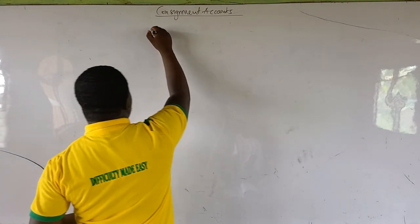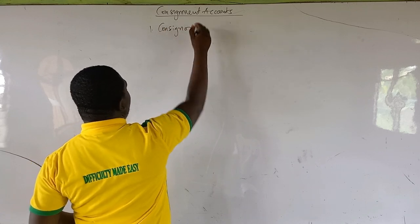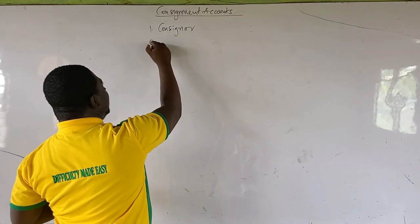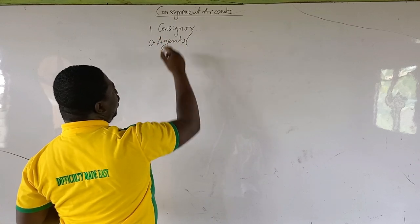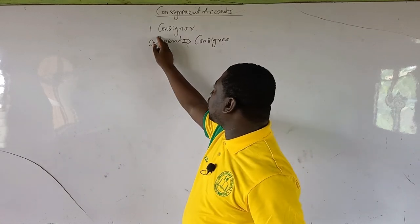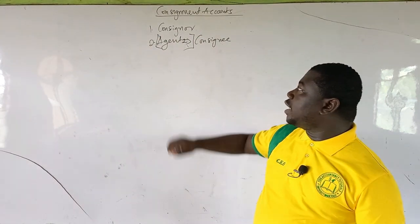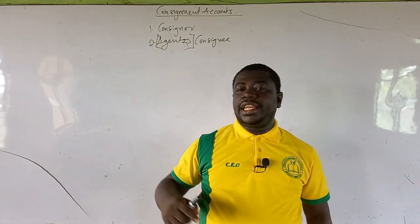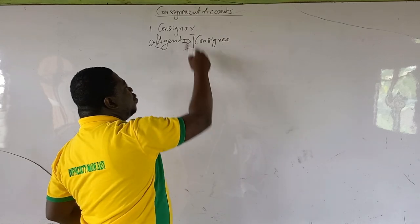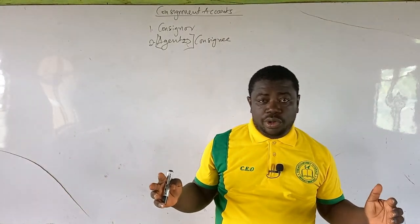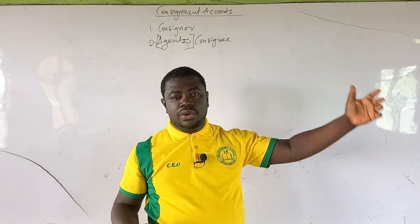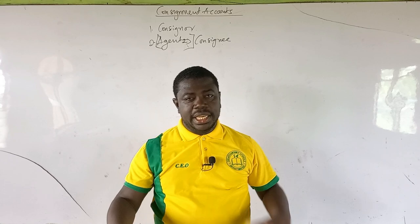There are terms you should understand. The consignor is the business giving out goods to be sold by an agent. The agent selling the goods on behalf of the consignor is called the consignee. The consignee is paid a commission on the sales. In summary: I give you my goods, you sell on my behalf, I pay you a commission. I am the consignor; you, receiving and selling the goods, are the consignee.